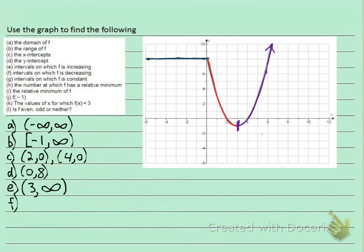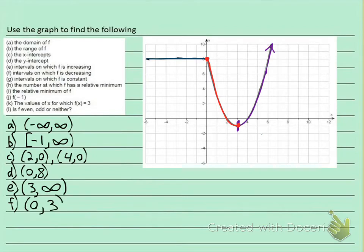Part F: intervals on which it's decreasing — the red section. The first point is where it starts changing, so it's not decreasing there. It decreases all the way from that point to x = 3. We give x values: it starts decreasing at x = 0 and stops at x = 3. So decreasing is the interval (0, 3) — 0 is not included and 3 is not included.